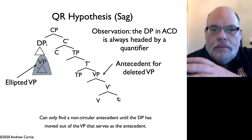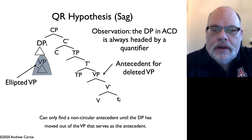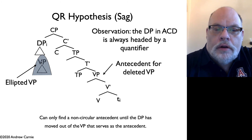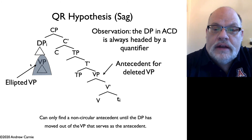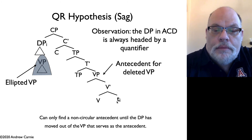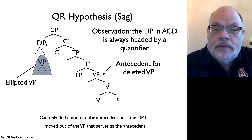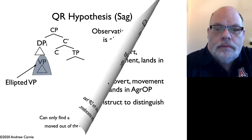The two hypotheses operate on the same basic principle: move something outside of the verb phrase that is the antecedent, so that this verb phrase is no longer dominating the thing it is connected to. That either happens, as in Sag's hypothesis, by QR, or in Hornstein's hypothesis by movement to AgrO.